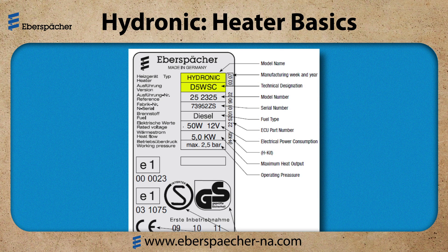The top two lines are the model name. Line number three is the model number — this will indicate if the fuel metering pump is internal or external. Line number four is the serial number, which is needed for all warranty claims. Line number five is fuel type: diesel or gasoline. Line number six is the electrical: 12 or 24 volt. Line number seven is the maximum heat output. And then on a coolant heater, line number eight indicates the operating pressure.